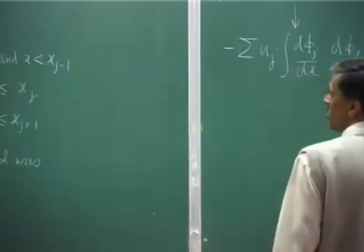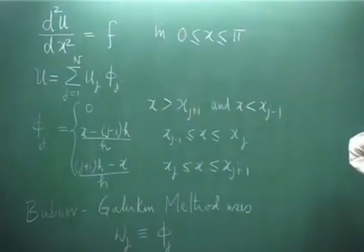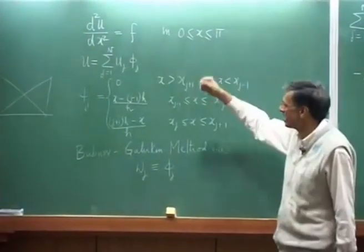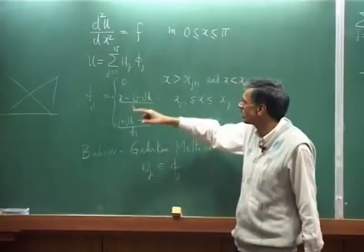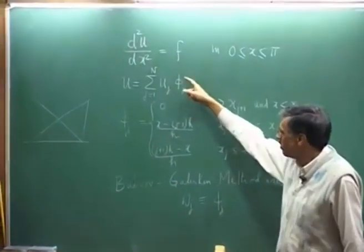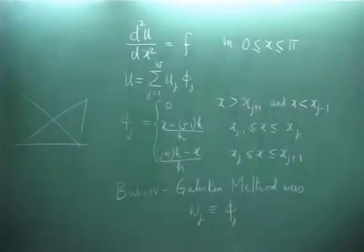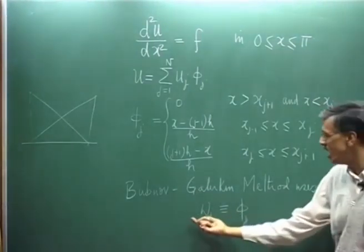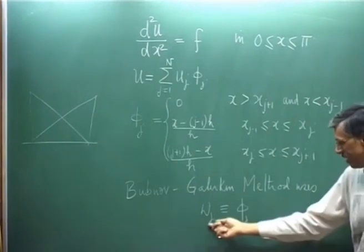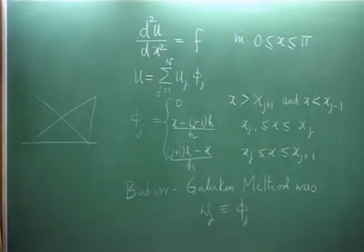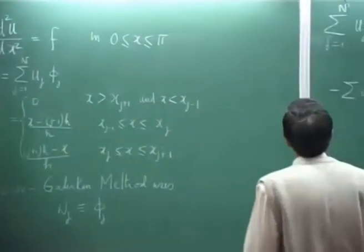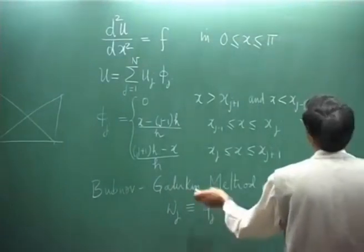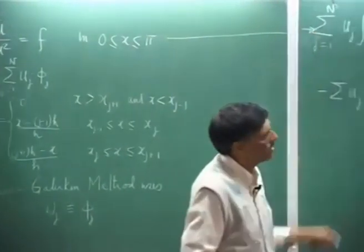Recall that in the last class, we started looking at how we apply a linear Galerkin type of method. We write U as a linear combination of the basis functions times the nodal values. In the weighted residual method, we choose the weight function W_j. In the Bubnov-Galerkin approach, W_j is nothing but phi_j itself. We substitute this in, multiply by the weight, and integrate — this is what we were doing in the last class.